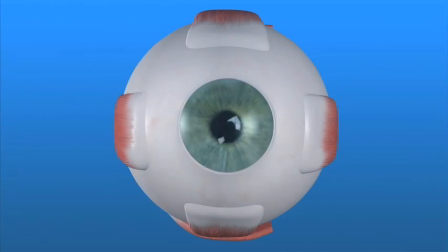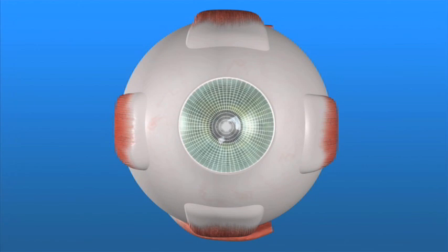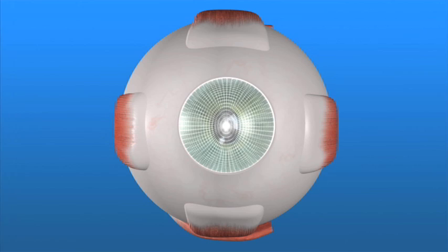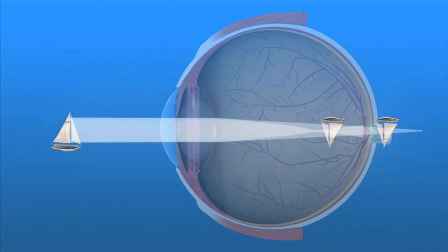Astigmatism occurs when the cornea is curved unevenly, shaped more like a football than a basketball. Light passing through this uneven cornea is not properly focused on the retina. Distance and close vision may both appear blurry.